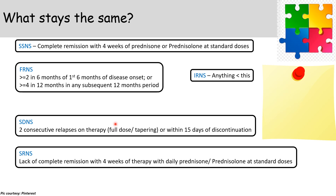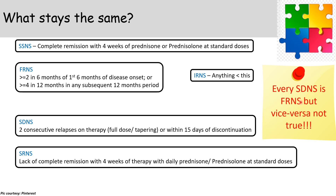Steroid-resistant nephrotic syndrome as per KDIGO is lack of complete remission with four weeks of daily prednisone therapy at standard doses. An important concept: every steroid-dependent nephrotic syndrome is frequently relapsing, but the vice versa is not true.